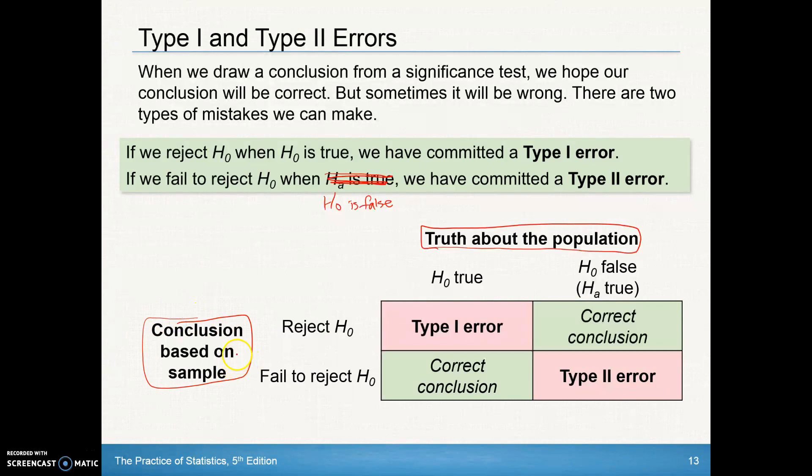So if I, through my sample data, reject the null when the null is really true, that's a mistake. That's a type 1 error.